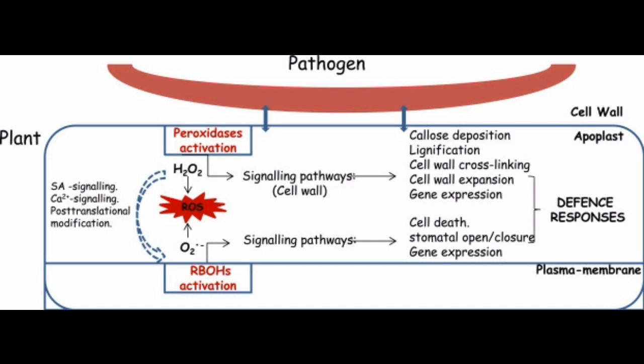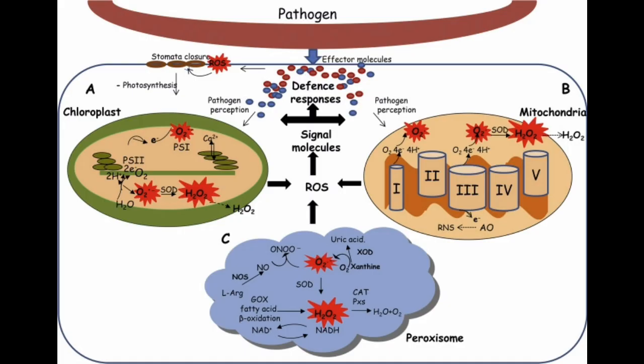During plant-pathogen interaction, the pathogen-associated molecular patterns perception allows a series of signaling events such as ion fluxes, MAPK activation, transcriptional reprogramming, callose deposition, lignification and reactive oxygen species production. Accumulation of reactive oxygen species has been proposed as one of the earliest events induced during plant-pathogen interaction, which controls and inhibits the pathogen growth.